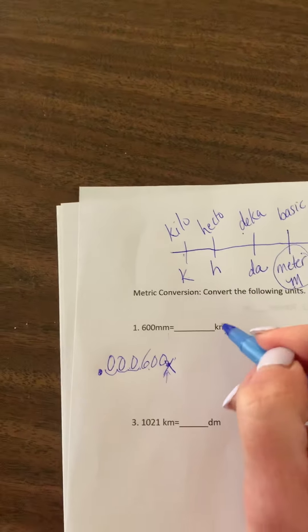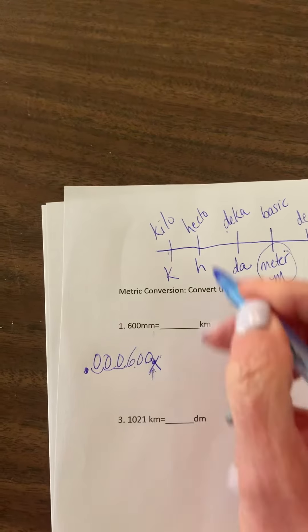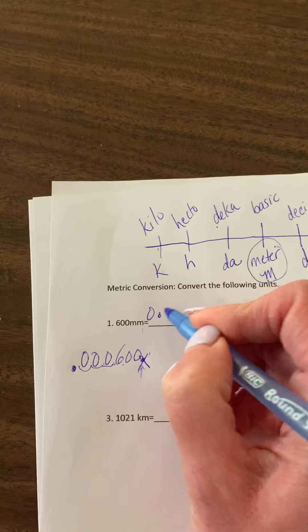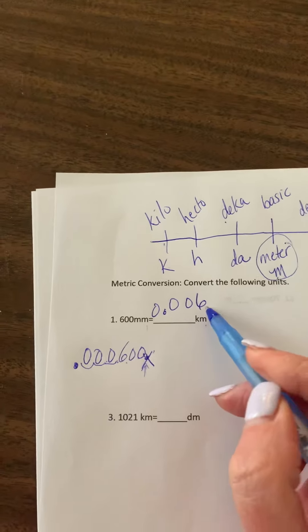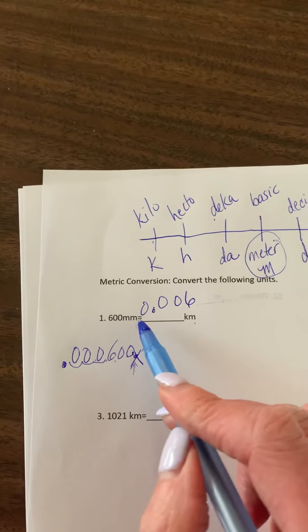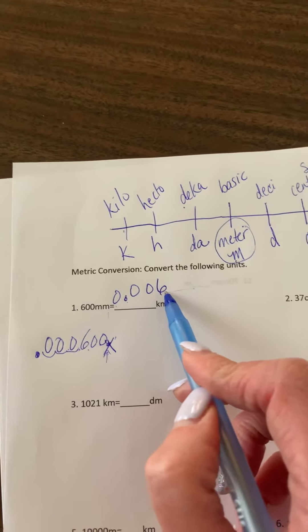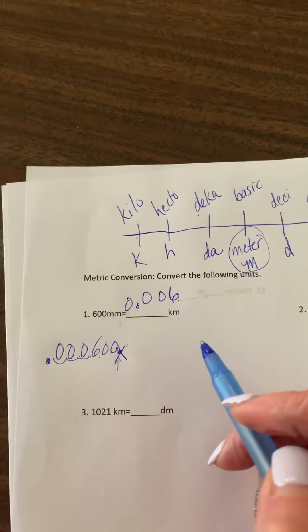So your answer here, and I realize I did do a crappy job of making this, is 0.006 kilometers. And we can stop there. You don't need these other zeros behind there. If you put them, they're not wrong. But this number would read zero and six one-thousandths. That's your answer.